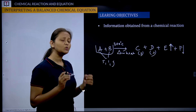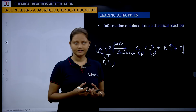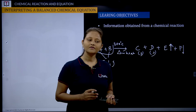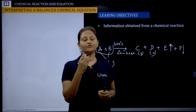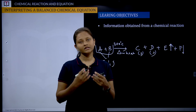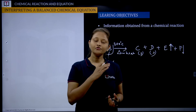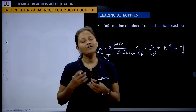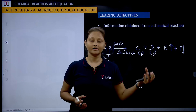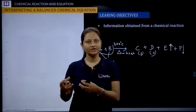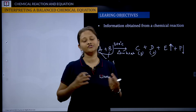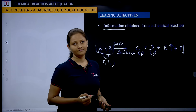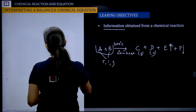We need to understand that reactants have their own masses and products have their own masses. If a product is in liquid or gaseous form, it has its own volume. We can interpret how much kg or gram of reactants gives how much gram of product, or how much mL of liquid or gas gives how much product. That mass-to-volume or mass-to-mass relationship can be revealed from the information in the chemical reaction.